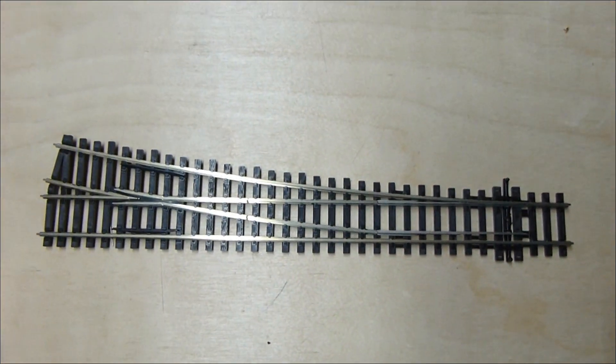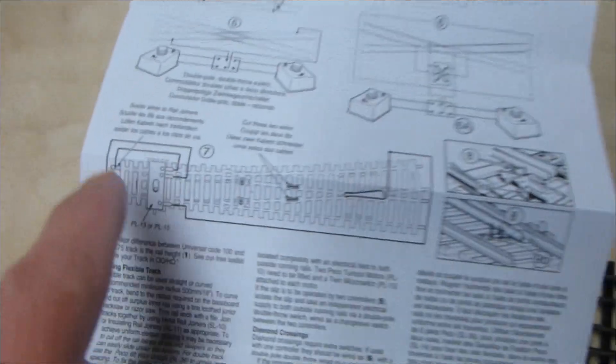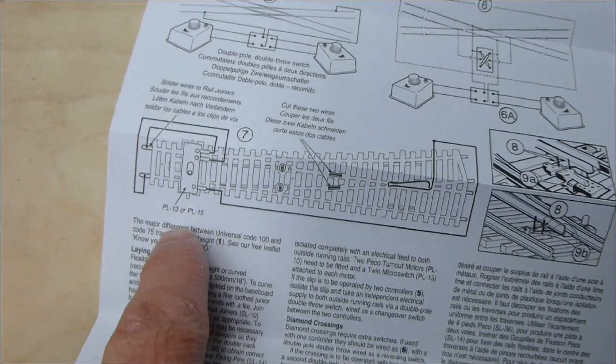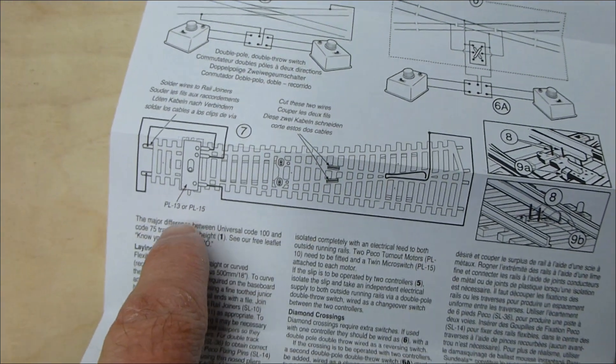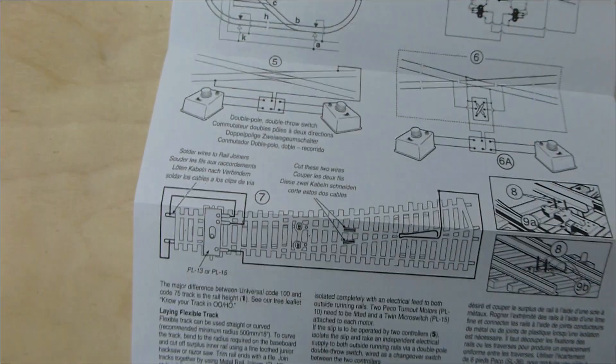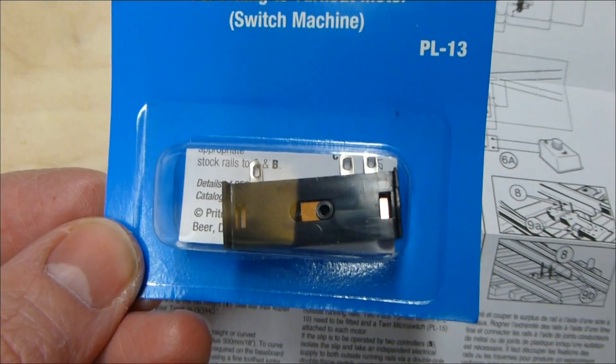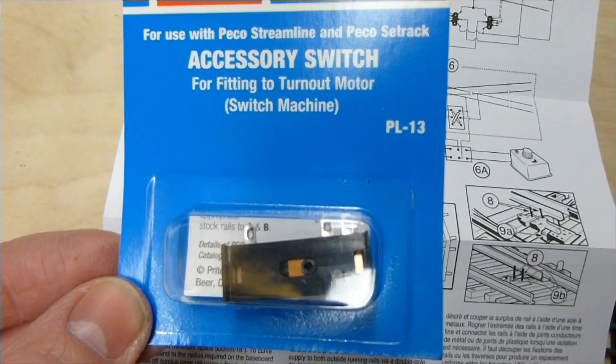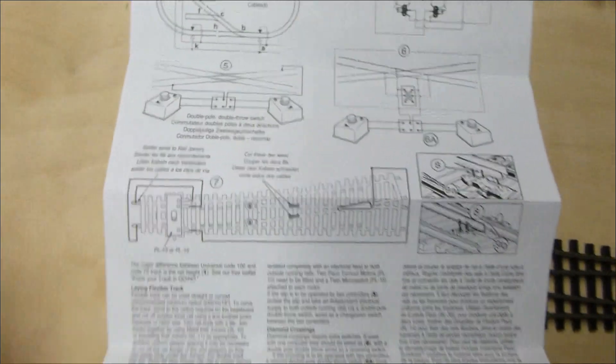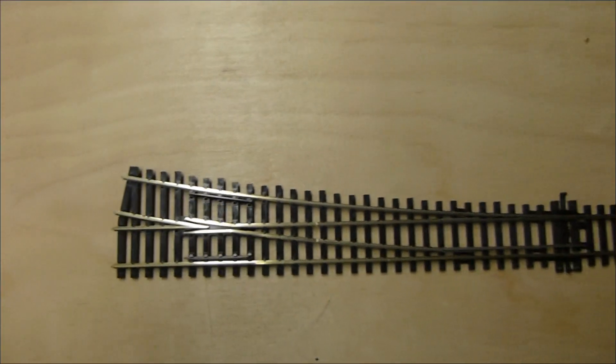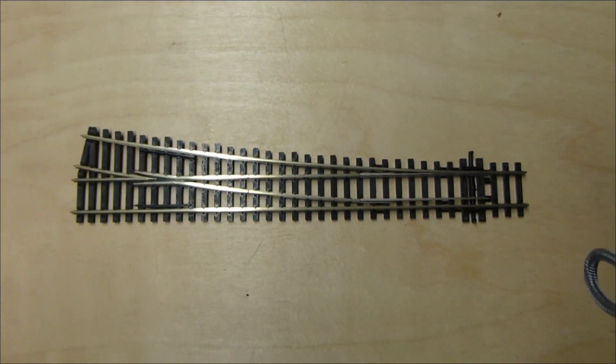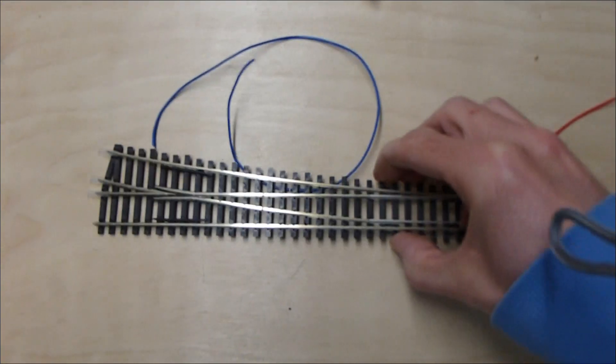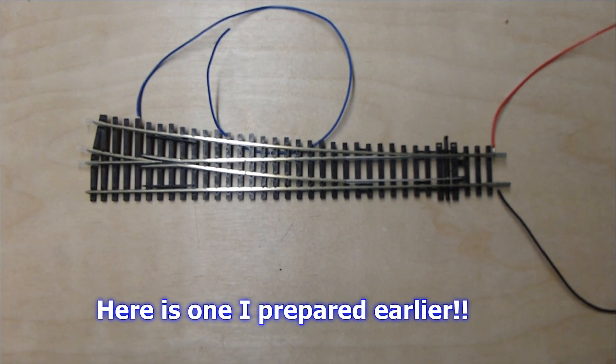You have to wire it up as per the diagram for use with DCC with a PL13 or PL15 accessory switch. I've got the PL13, which I'll show you how to fit together with the point motor. So in all true Blue Peter style, I'm going to get rid of that one and show you how the point is now prepared for DCC.